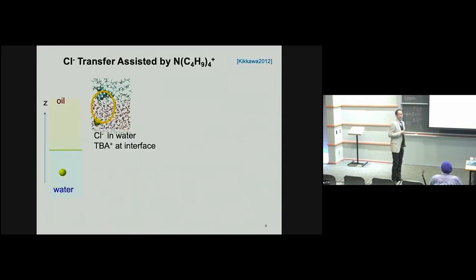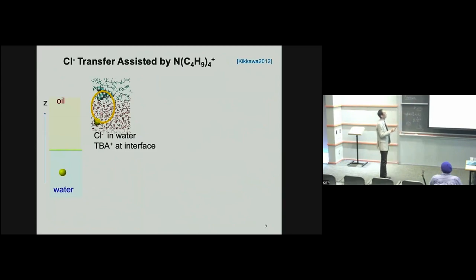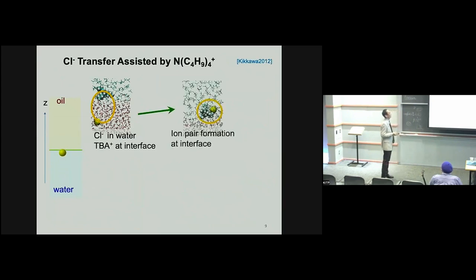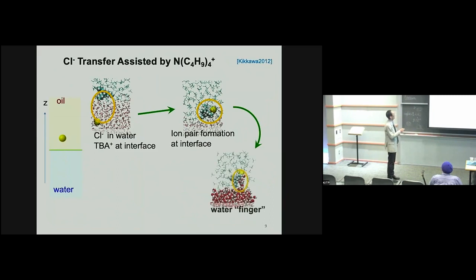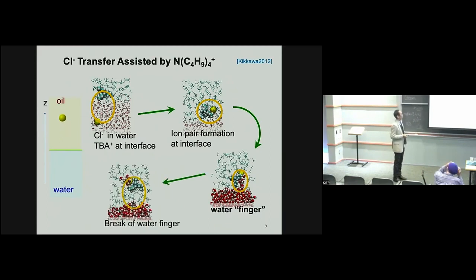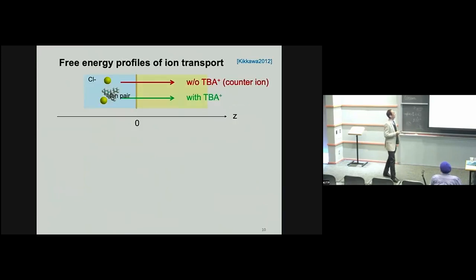In my preliminary research, I studied Cl⁻ transfer assisted by a hydrophobic catalyst, tetrabutylammonium. This is a typical picture from molecular dynamics: when Cl⁻ moves from the water phase to the oil phase, first an ion pair is formed at the interface with the tetrabutylammonium. Then as the ion moves to the oil phase, a water finger is formed, and at some point the water finger breaks and the ion moves into the oil phase.